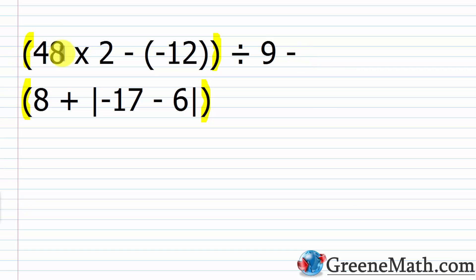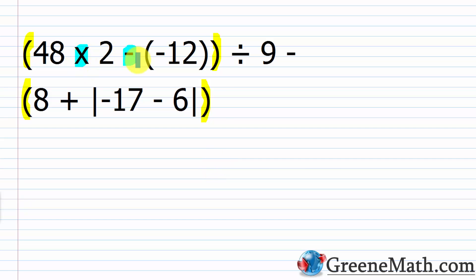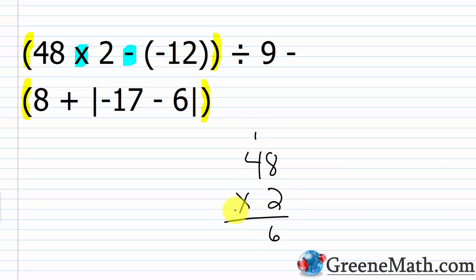Let's start with the parentheses here. It looks like I have parentheses again right here, but this is just used to separate the minus a negative so that we don't have two operator symbols next to each other. So what I'm looking at is multiplication and subtraction. I want to multiply before I subtract. What is 48 times 2? 2 times 8 is 16, 2 times 4 is 8 plus 1 is 9, so that would be 96.